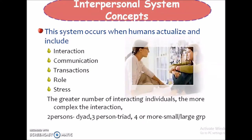Next is the interpersonal system concept. The interpersonal system occurs when human beings interact and includes interaction, communication, transaction, role and stress. When there is a greater number of interacting individuals, the more complex the interaction will be. When two persons interact that is called a dyad; three persons interacting is a triad; and four or more people is known as a small or large group.